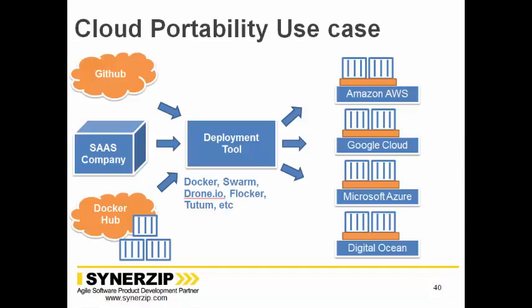For cloud portability, Docker adds a Docker daemon layer across all cloud platforms. Amazon AWS provides Docker support with Elastic Container Service. Google Cloud has Kubernetes. Microsoft Azure and DigitalOcean also support Docker. It's like a virtual machine for Java — write once, run anywhere. Tools like Docker Swarm and Docker IO, plus services like Tutum and Flocker, help manage this portability across clouds.